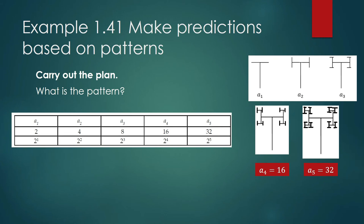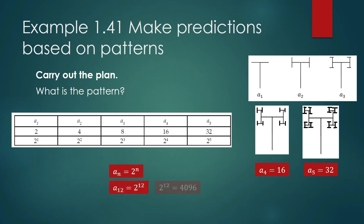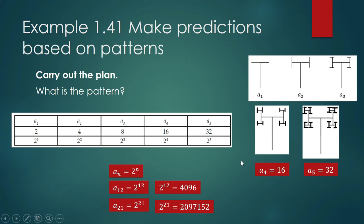The general term of this geometric sequence is 2 to the n. To get the 12th term, we compute 2 to the 12th, which equals 4,096. For the 21st term, we compute 2 to the 21st, which equals 2,097,152.